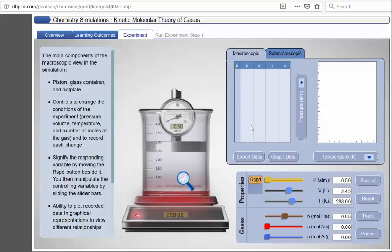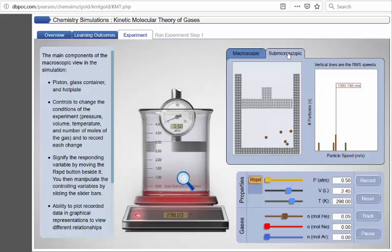Let's click on the Run Experiment tab. What we're really interested here is the submicroscopic representation. And here in the simulation we can now see that we have the individual atoms that are bouncing around within our particular container.